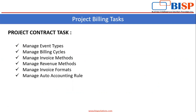These are the tasks that you have to configure for the project billing purpose. We have to create the event types, then we have to create the billing cycles, then we have to create the invoice methods, revenue methods, invoice formats, and then we have to do the configurations that are related to the auto accounting rule.